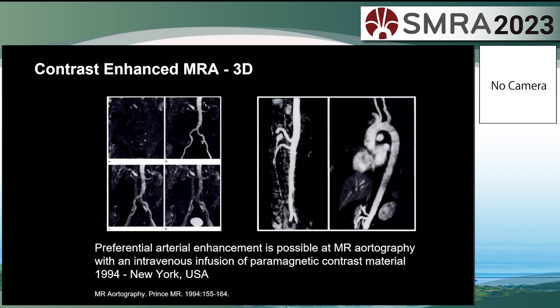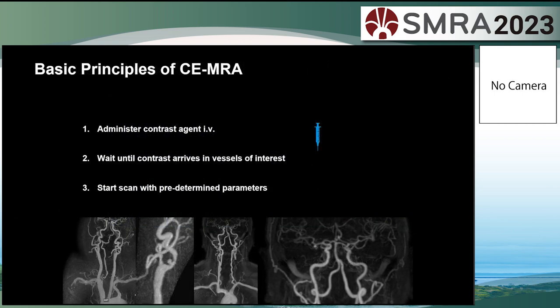Contrast-enhanced MRA has been around for at least 20 years and has been evolving throughout that time. 3D was a breakthrough — we weren't just looking at a single projection; we could look at any angle. But over the years, the basic principles haven't changed: we administer gadolinium contrast agent IV, wait until contrast arrives where we want to see it, start the scan with predetermined parameters, and end up with lovely images.